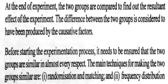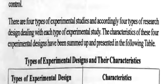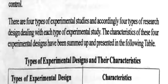The main techniques for making the two groups comparable are: 1. Randomization and matching, and 2. Frequency distribution control. There are four types of experimental studies and accordingly four types of research design, each dealing with a different type of experimental study. The characteristics of these four experimental designs have been summarized in a table.